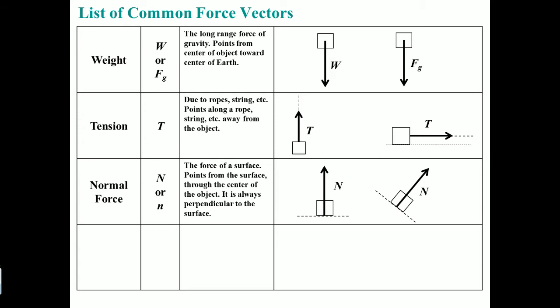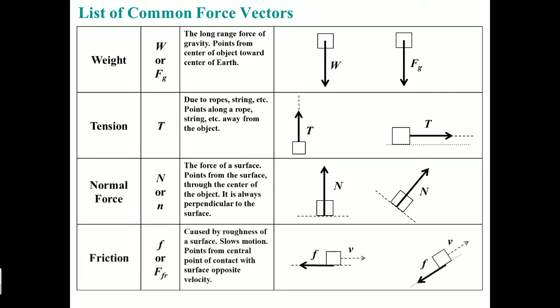The frictional force is caused by the roughness of a surface. It slows an object down, therefore it is always in the opposite direction of velocity. Please understand the frictional force touches the ground, so it has to be on the ground and it goes in the opposite direction of the object's velocity.